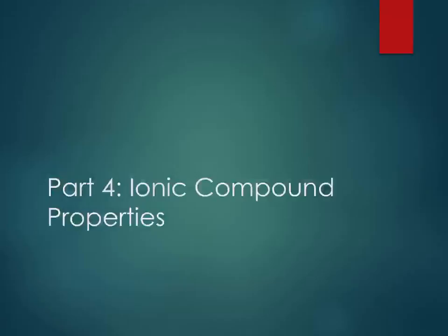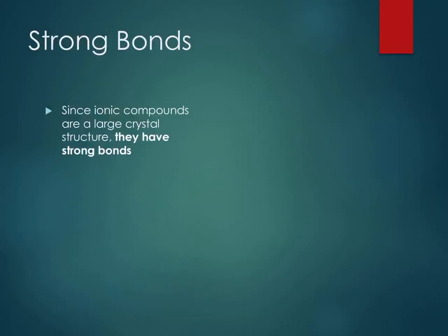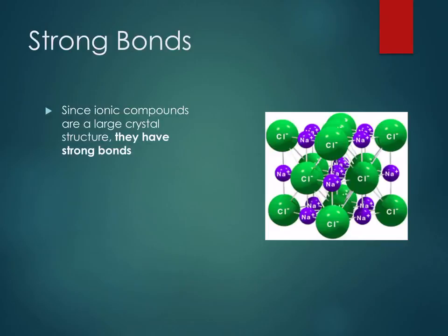This is the last video in the series on ionic bonds for that lecture, and we're going to talk about properties of ionic compounds. Ionic compounds have really strong bonds because of the crystal structure they're in. They're really locked in place — remember, sodium has given chloride its electron, and because they have charges they're really attached to each other. This leads to several properties for ionic compounds.